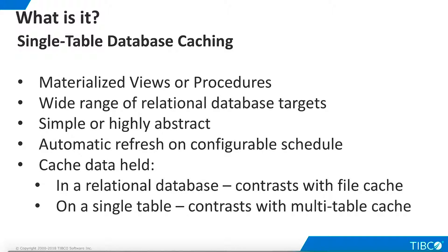When a procedure is cached, the results produced by specific input parameters, which are called variants, are physically stored on the cache target whenever a new variant is executed. When subsequent users request the same variant, TDV retrieves data from the cache rather than execute the actual procedure. Cached views and procedures may be low-level replicas of physical data sources,